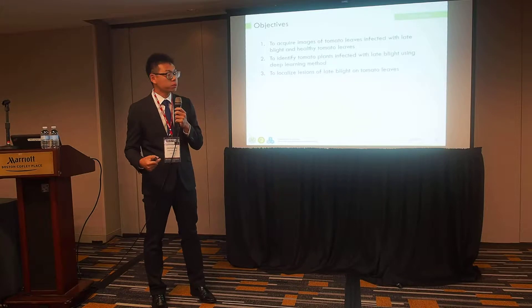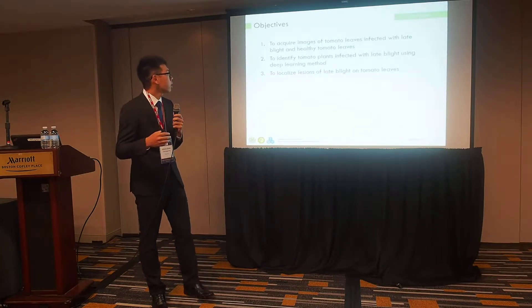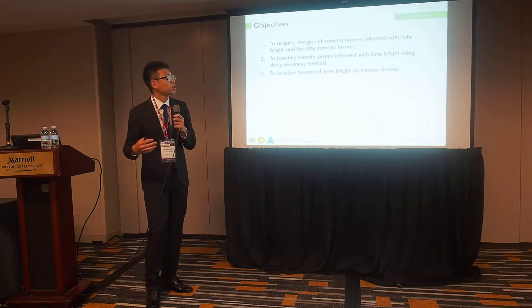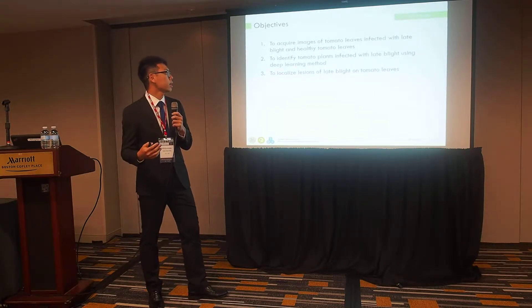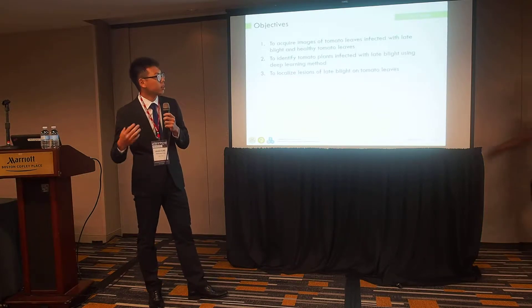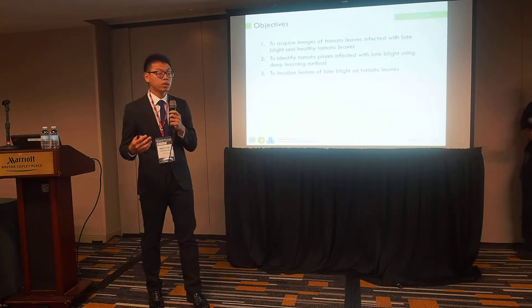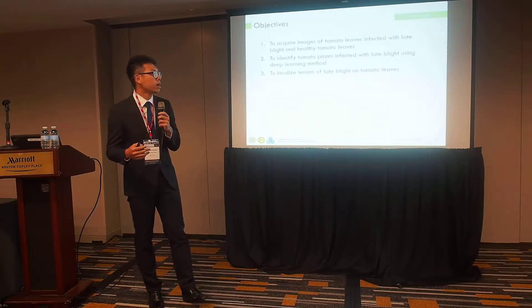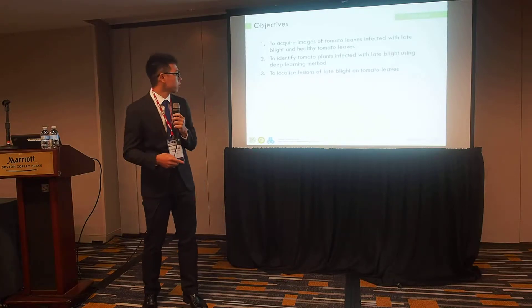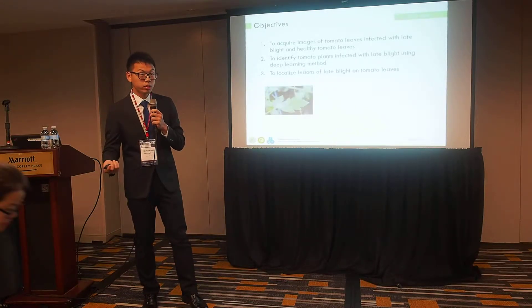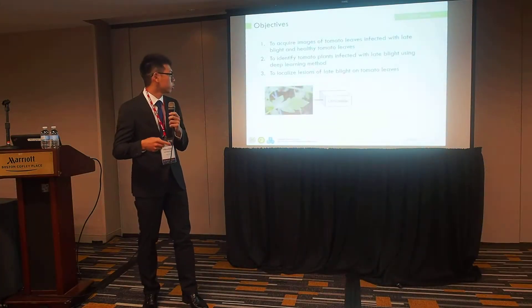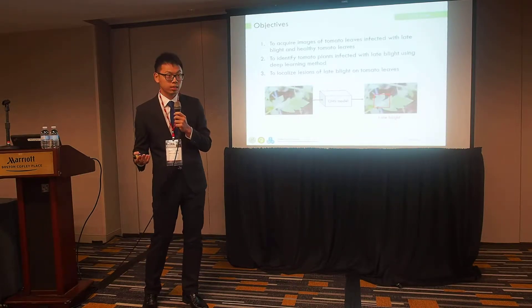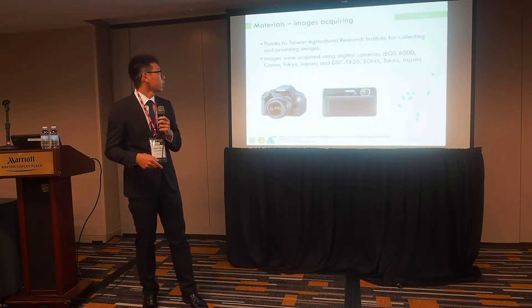Here are my objectives. First, I want to acquire images of tomato leaves infected with late blight and healthy tomato leaves. Second, I want to identify tomato plants infected with late blight using a deep learning method. And finally, I want to localize the lesions of late blight on tomato leaves. I think it will look like this — I get images, put them into a model, and the model tells me what the image is and where the lesion is located.